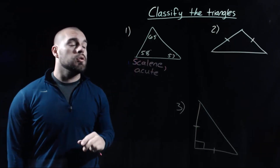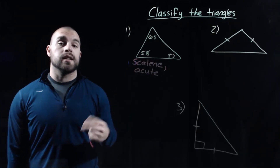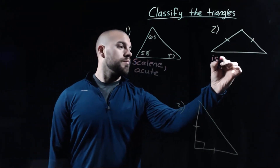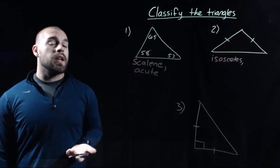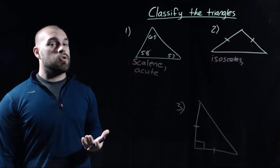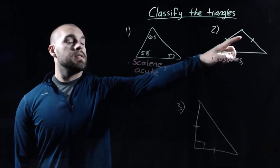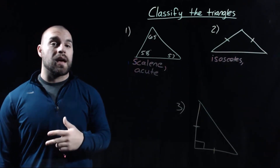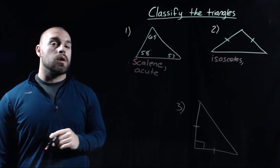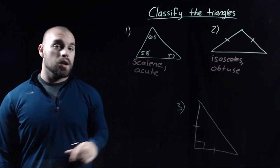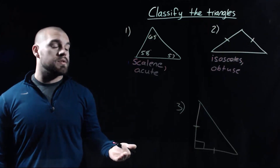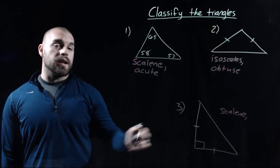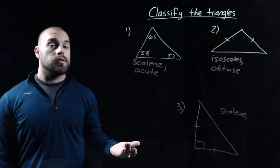For number two, looking at the sides, we have two sides marked as congruent, so this triangle is isosceles. We don't have angle measures given, but the angle at the top looks like it opens past 90 degrees, making it obtuse — so this is an obtuse triangle. For number three, this one also has two congruent sides, so we can call it isosceles, and there is a right angle marked, so this is also a right triangle.